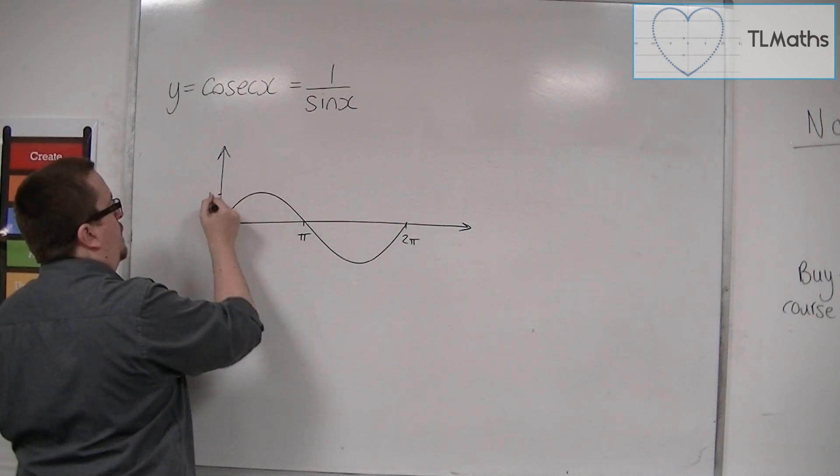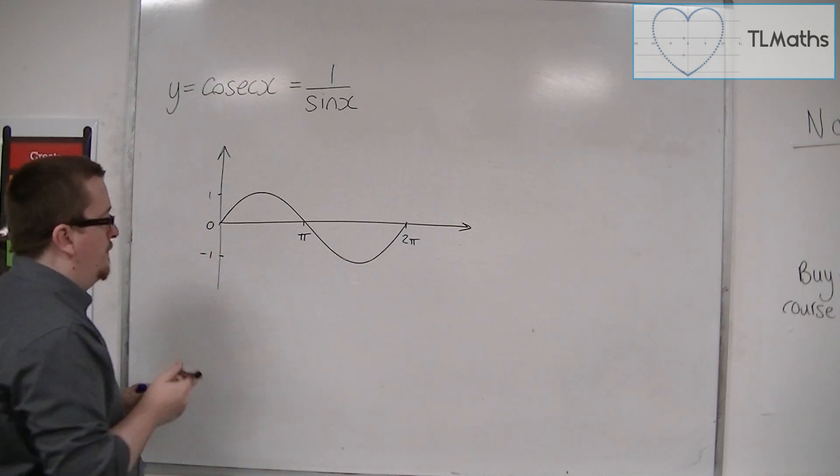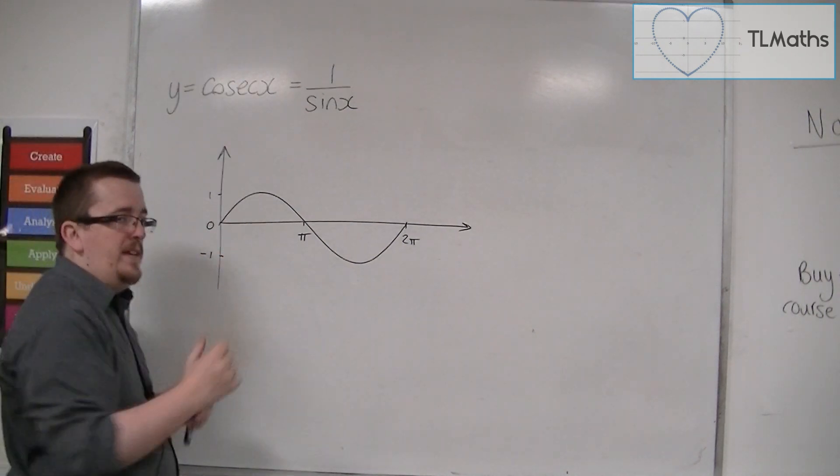Zero, this maximum point is 1, the minimum point is minus 1. And so this would be sine x.